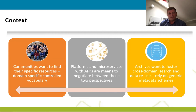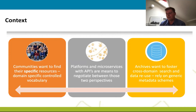The context is a significant challenge: communities want to find specific resources with domain-specific controlled vocabularies, but as an archive, the goal is also to foster cross-domain search and data reuse. To address this, the team works on platforms and microservices with APIs. Their basic platform is Harvard Dataverse, extended with additional functionality including a semantic API, external controlled vocabulary support, and a knowledge graph.